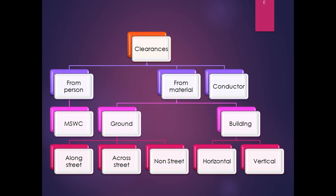Now we will look into the clearance requirements. Clearance is the distance from the nearest point to some charged conductor. The nearest point can be some person, for which we follow the minimum safe working clearance seen earlier. The nearest point can also be some material like ground or a building. If it is the ground, it may involve a street, so we have clearance along the street or across the street — both are different. The ground may also involve somewhere that is not a street, like a field, farming land, or open ground.